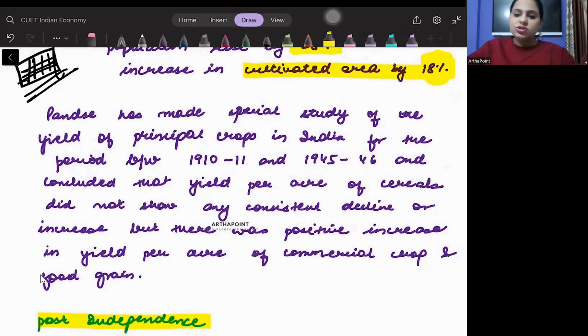Panse in his study basically mentioned that even when we compare 1910-11 with 1945-46, we see that there has been no increase in the productivity of the yield per acre of cereals.